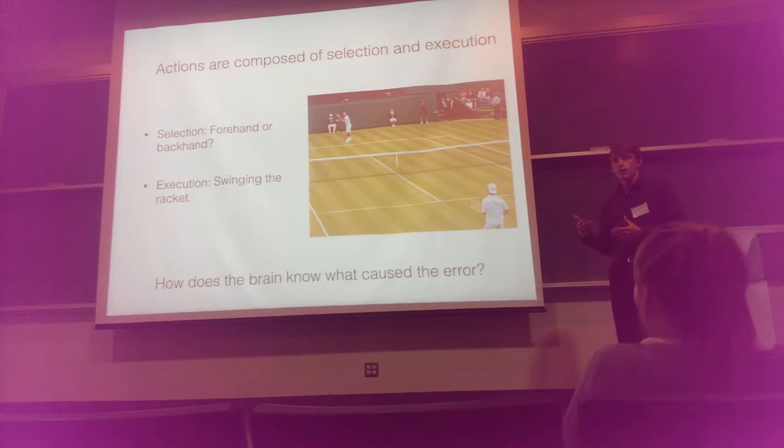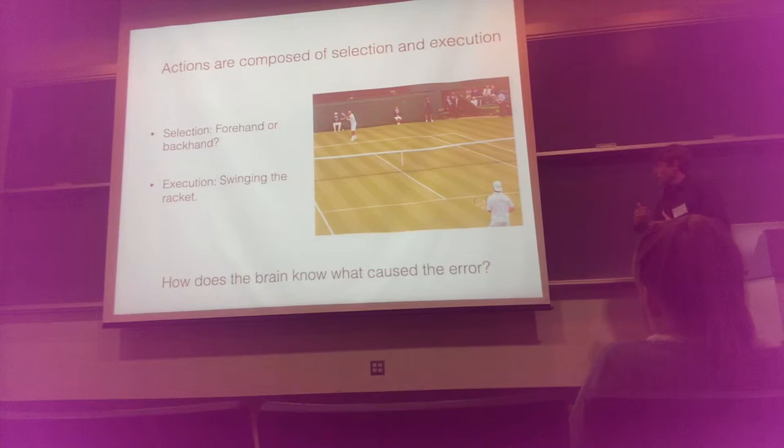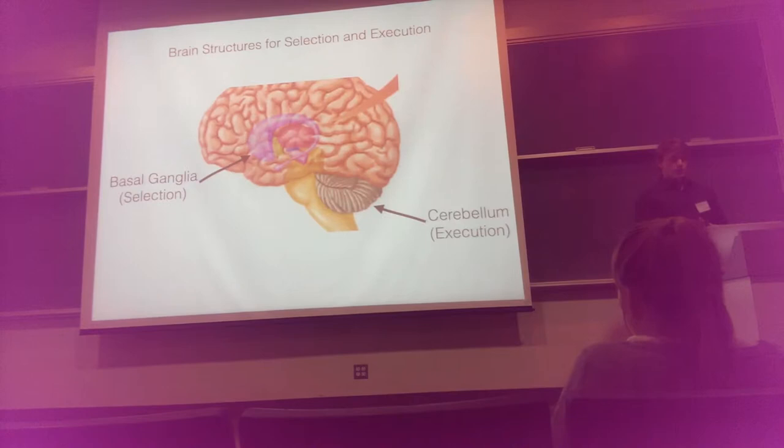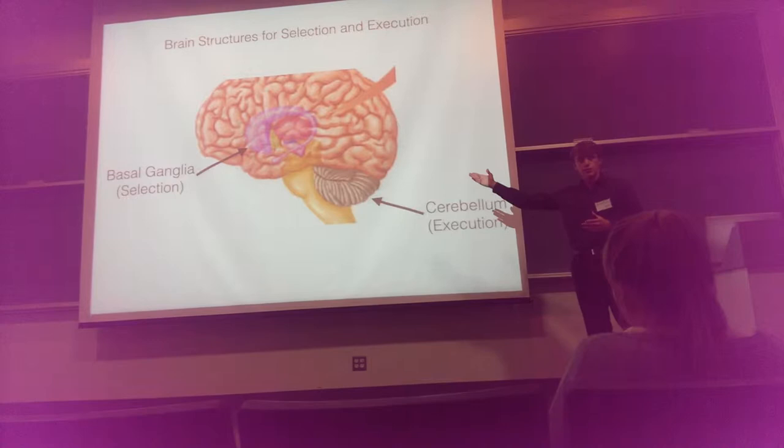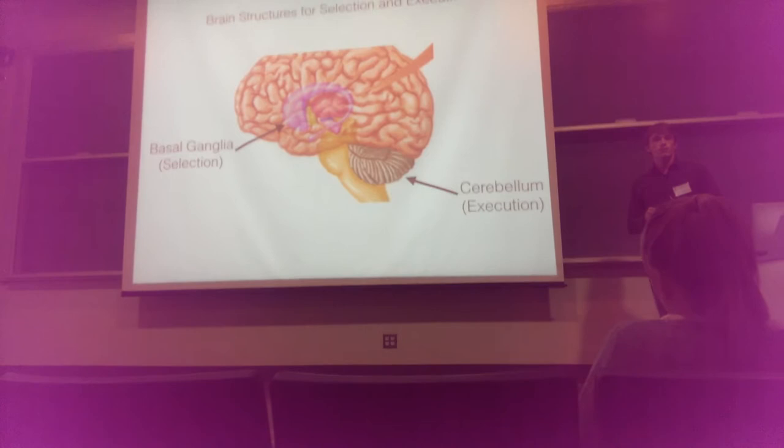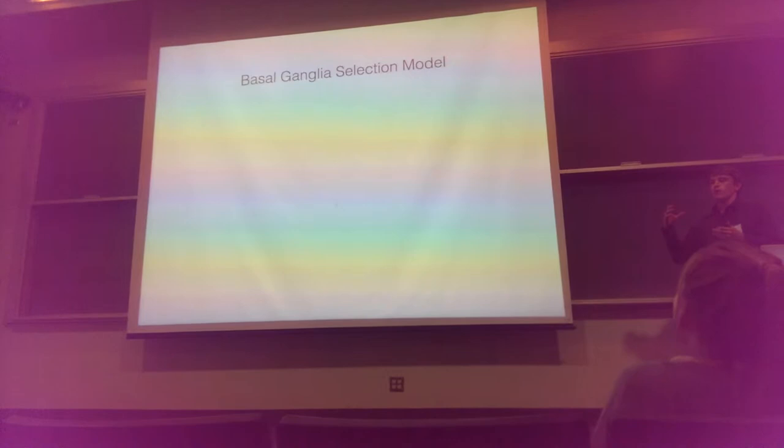If we're going to understand how the brain solves this problem, we need to understand how the brain implements these two processes. The two brain structures important for action selection and execution respectively are the basal ganglia — the structure pictured in the center, important for selection — and the cerebellum — the structure pictured in the bottom right, important for execution.